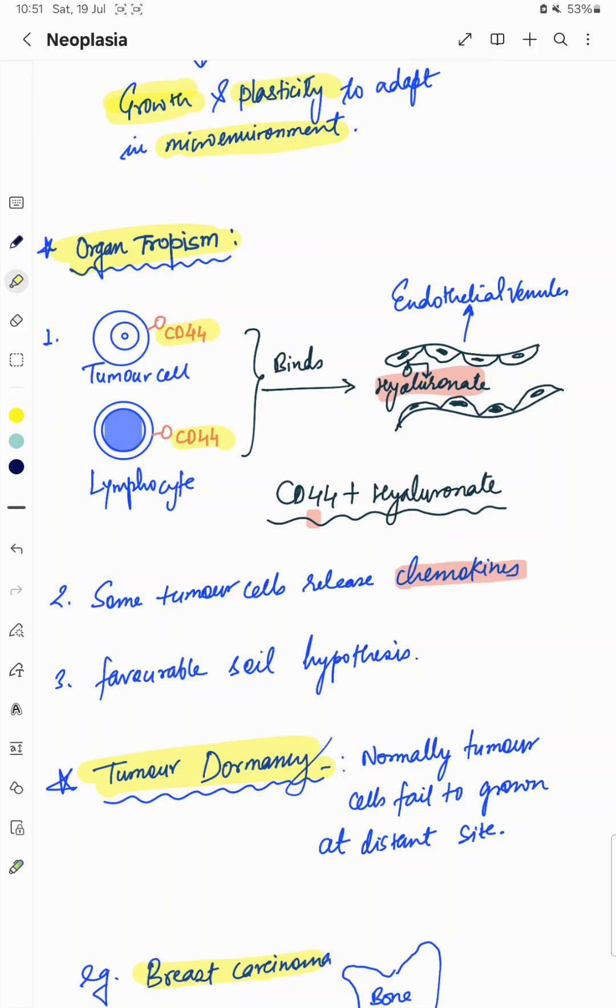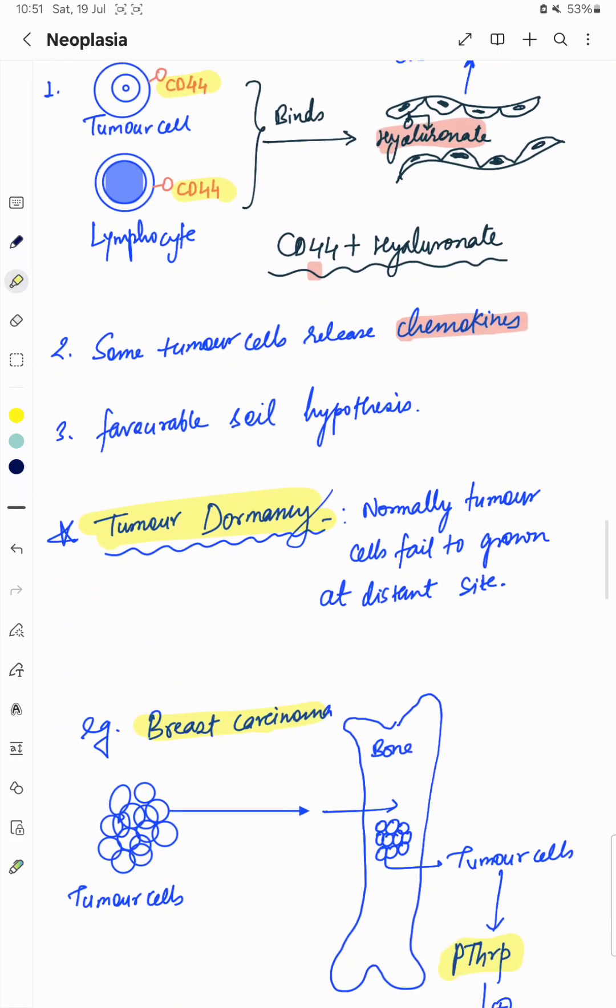Likewise, breast cancer tends to metastasize in lungs because of similar kind of microenvironment. This is a favorable soil hypothesis.